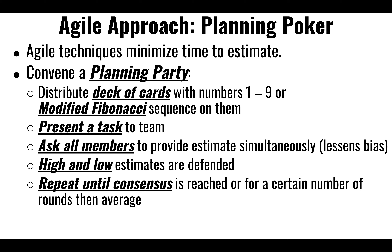Agile looks to use a much leaner approach to planning. They might use a deck of cards numbered with a modified Fibonacci sequence — one, three, five, nine, thirteen, thirty-two — where folks vote at a planning party, and then have those who voted highest and lowest discuss it and come to a consensus.